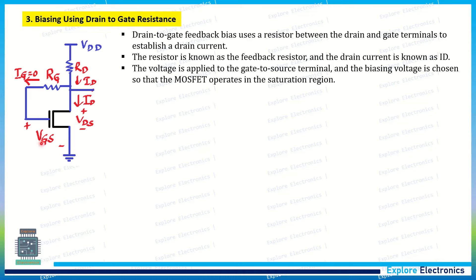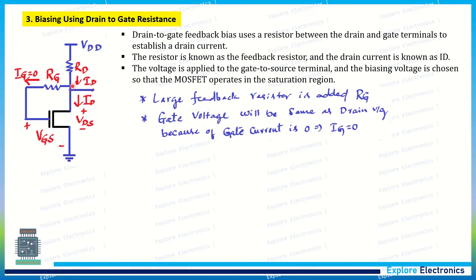VDS and VGS are the same here because RG is connected between gate and drain, but the current flowing through the gate is always zero in a MOSFET. Because of the SiO2 layer present under the gate, it does not allow current to flow into the MOSFET from the gate. Since gate current is zero, this path is effectively a short circuit between the gate and drain terminals.